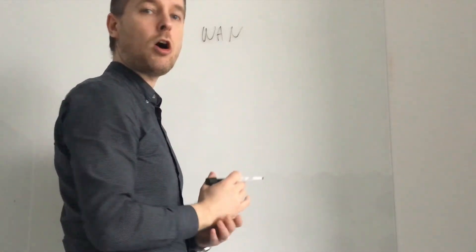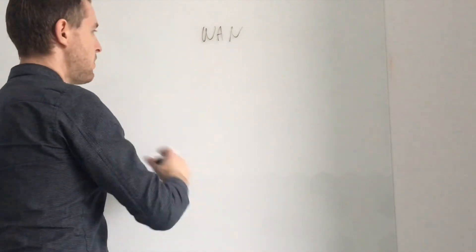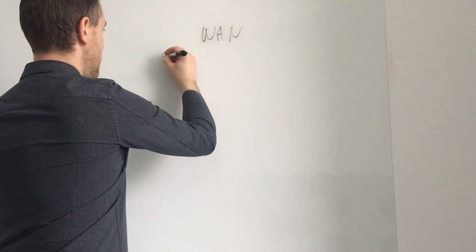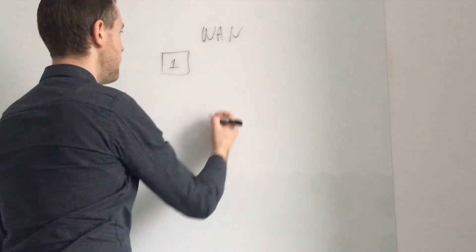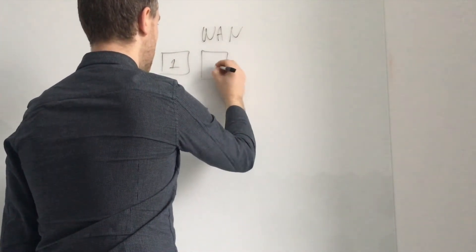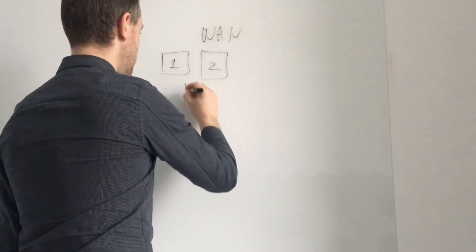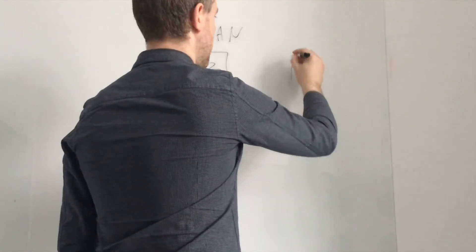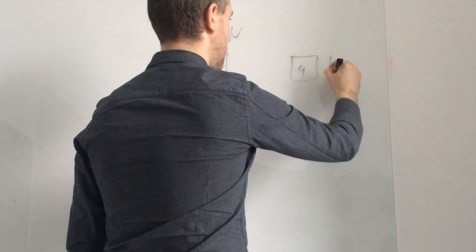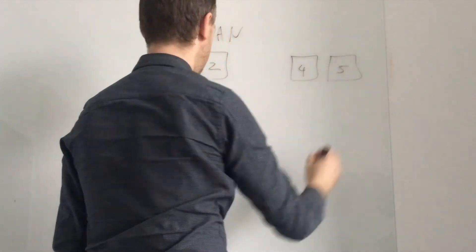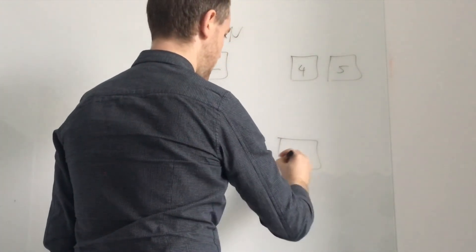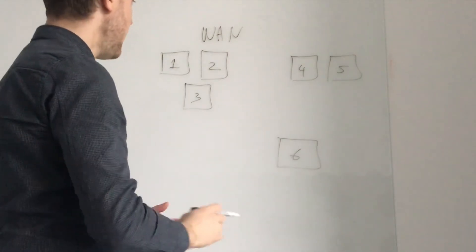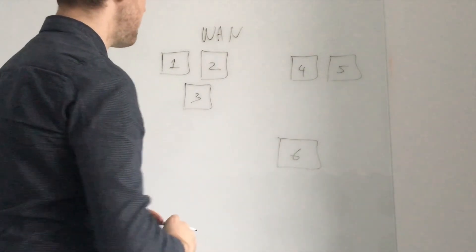You can also have more complex sort of WAN diagrams if you're looking at multi-state. So let's say I've got a site here, we'll call this one. I've got a site here, we'll call this two. We've got a site here, we'll call this three. Got a site here, four. A site here, five. And then we've got a site down here, six. So now we've got a number of different setups here.